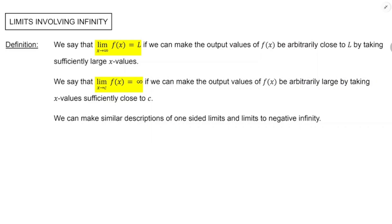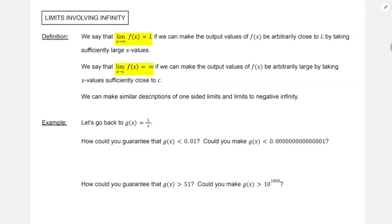I'll show you what I mean in a second. We could definitely make similar descriptions of one-sided limits and limits to negative infinity. Back to g of x equals 1 over x: how could we guarantee that g of x is less than 0.01? Thinking about the horizontal asymptote, how can we get that close to the x-axis — within 0.01?